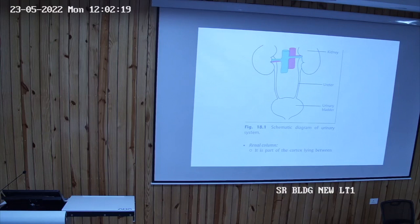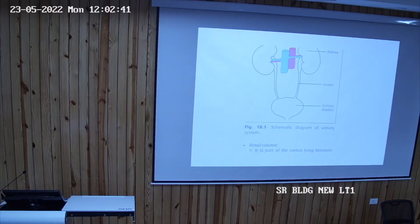The kidneys consist of functional units. The structural and functional units of the kidneys are nephrons. The number of nephrons in human beings is about one million. These nephrons consist of two parts: renal corpuscles and renal tubules.